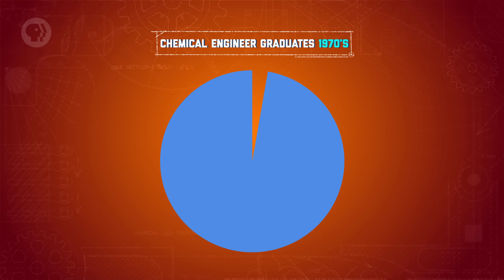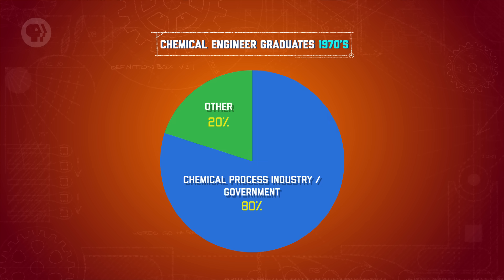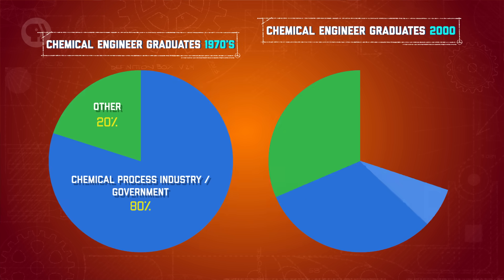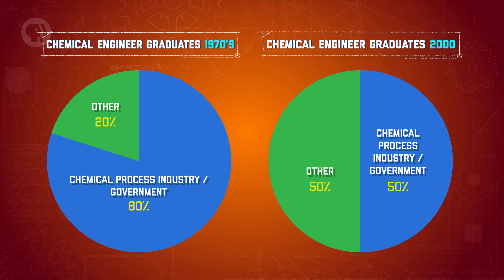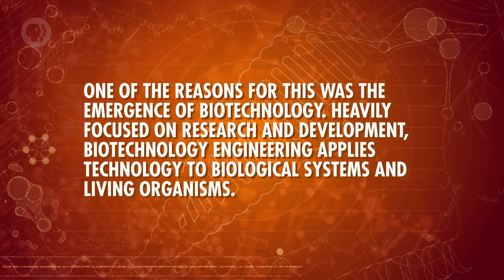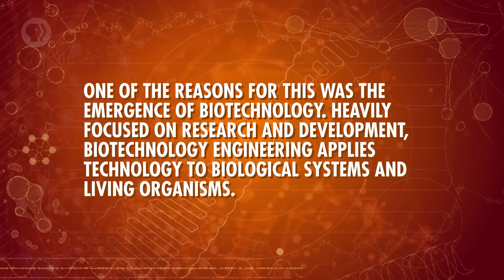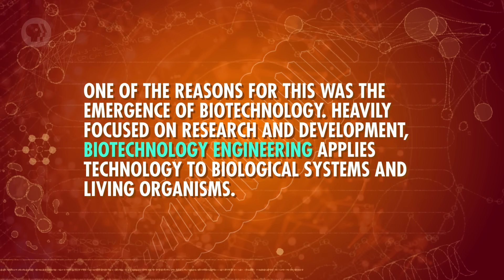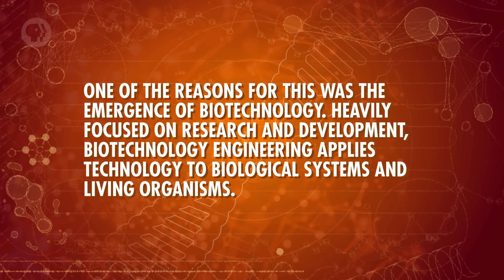As recently as the 1970s, the field was much more narrow than it is now. Back then, around 80% of graduating chemical engineers took jobs in the chemical process industry and government. By 2000, that 80% had dropped to about 50%. One of the reasons for this was the emergence of biotechnology. Heavily focused on research and development, biotechnology engineering applies technology to biological systems and living organisms. Once we know how and why biological processes work, we can find ways to change, adapt, and control them, with the aim of making our lives better.